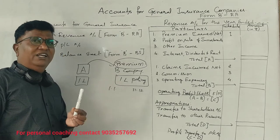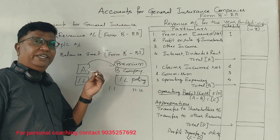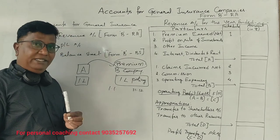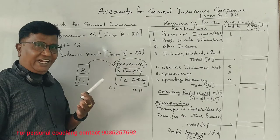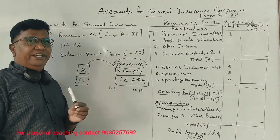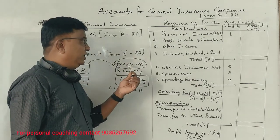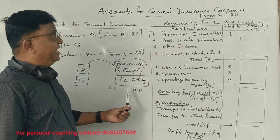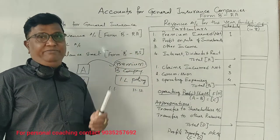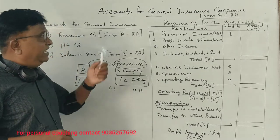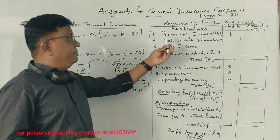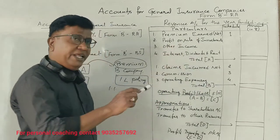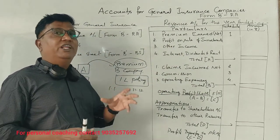We will go to Company A and Company B. As for the amount of Company A, we will go to the property. We will clear the amount of Company A. Now we have a premium, which is a major income of the general insurance company. This is the premium net amount.